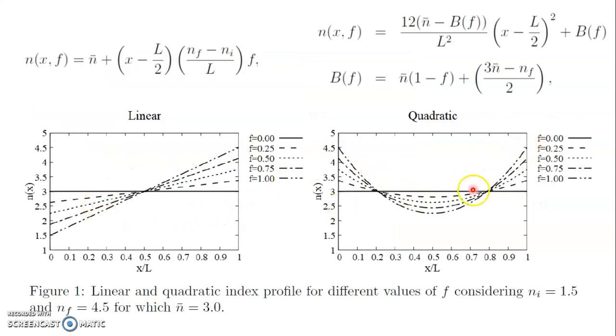The linear and quadratic profiles are related with the f parameter, and this parameter is also related with the slope for the linear profile and the curvature for the quadratic column. We observe here different values of f and also different values for the relative index profile.